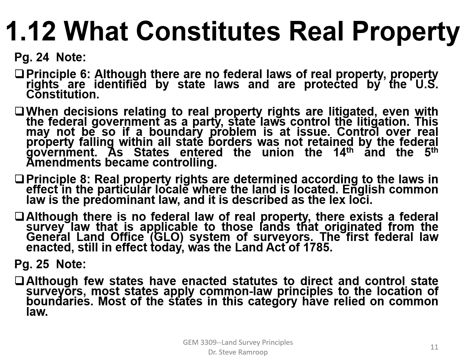Page 23, Principle 6: Although there are no federal laws of real property rights, property rights identified by state laws are protected by the U.S. Constitution. When decisions relating to real property rights are litigated — even with the federal government as a party — state laws control the litigation. This applies unless a boundary problem involves state boundaries between neighboring states, which may be a state or even federal issue.